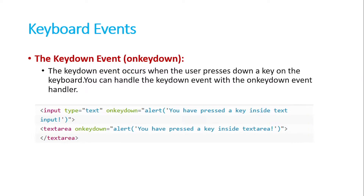Then we have keyboard events. These events occur when somebody presses any keyboard key. The first one is onkeydown. The onkeydown event occurs when the user presses down a key on the keyboard. You can handle the keydown event with the onkeydown event handler. This is similar to the other events — we just change the event name and pass the function or method we want to execute on that particular event.